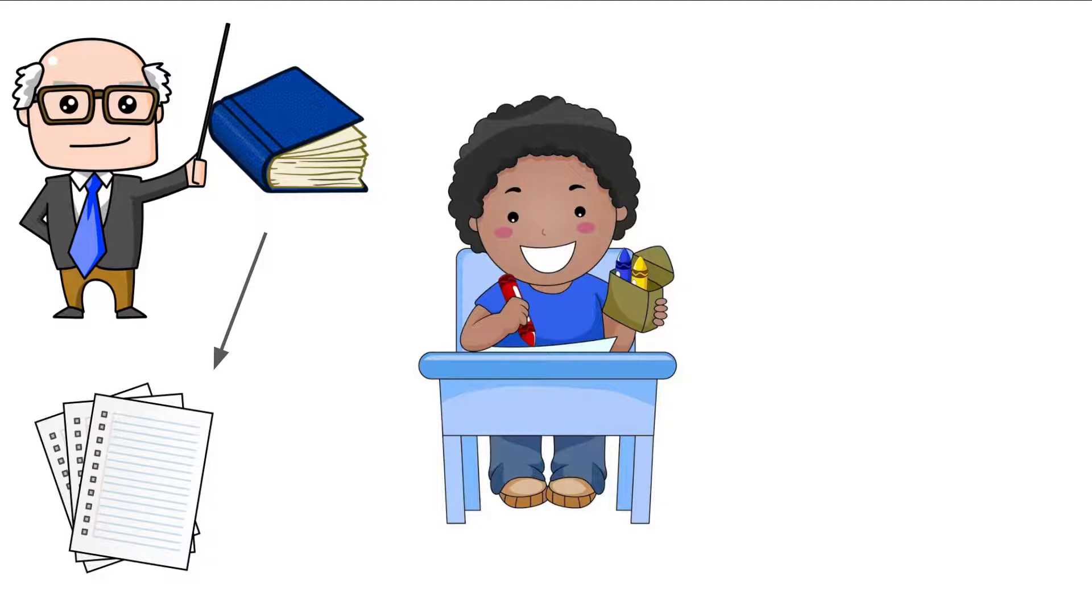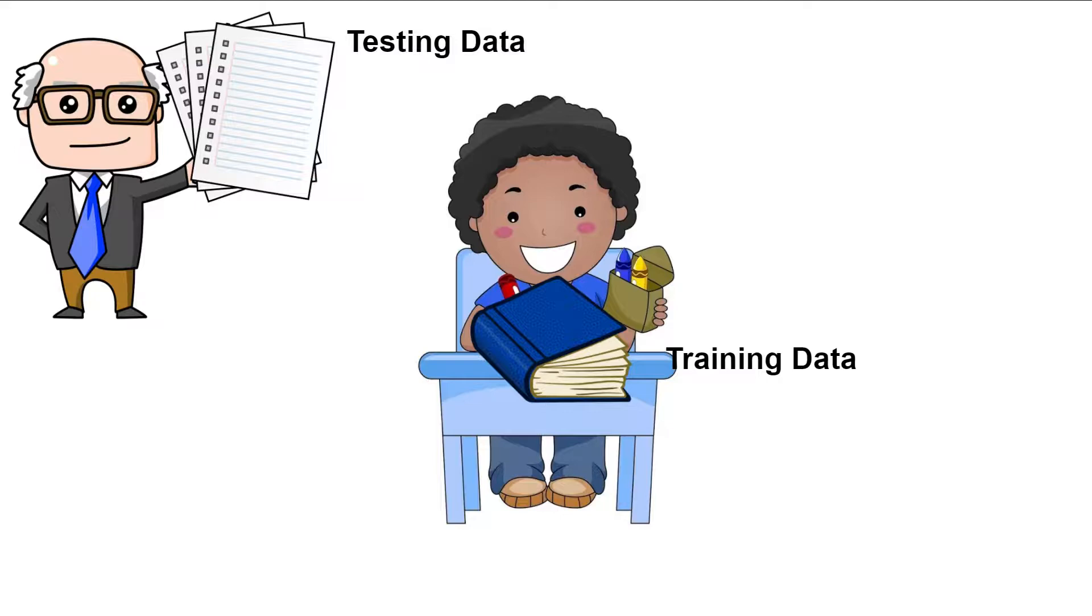just memorize the answers, right? So we're going to give the child this book, this textbook, and we're going to tear out a few pages as a test. The textbook is called the training data because the student is going to be training using that data, and the pages that we pulled out for the test are the testing data.